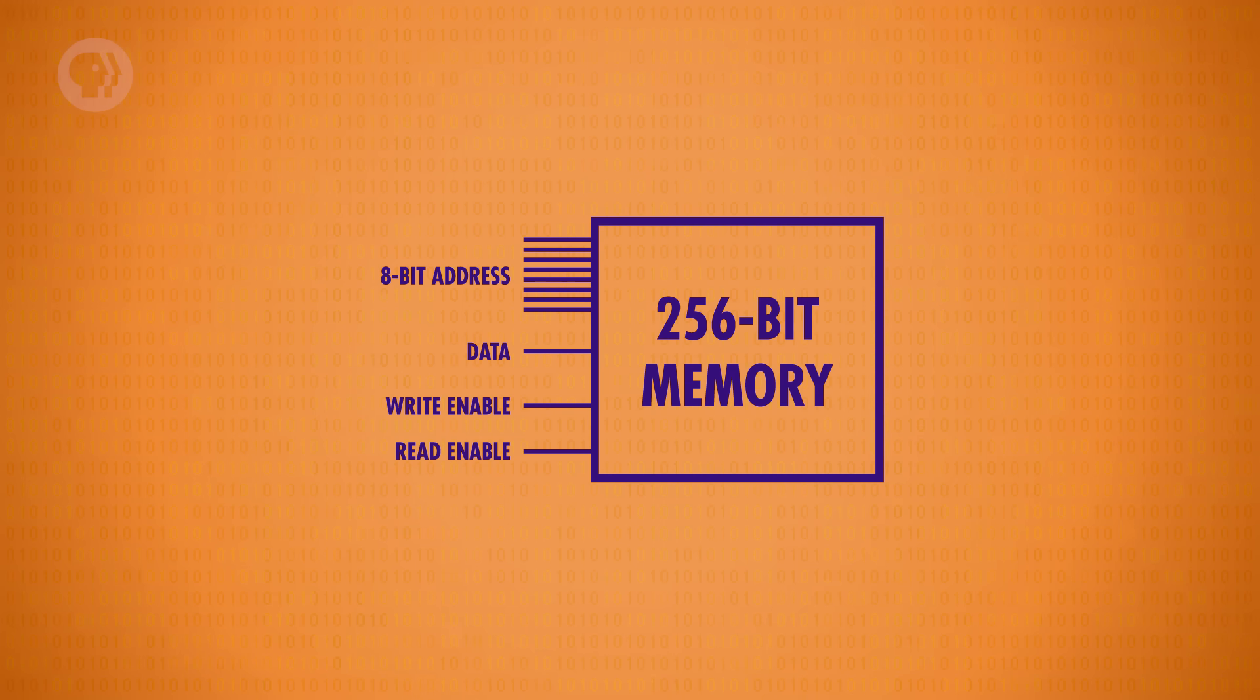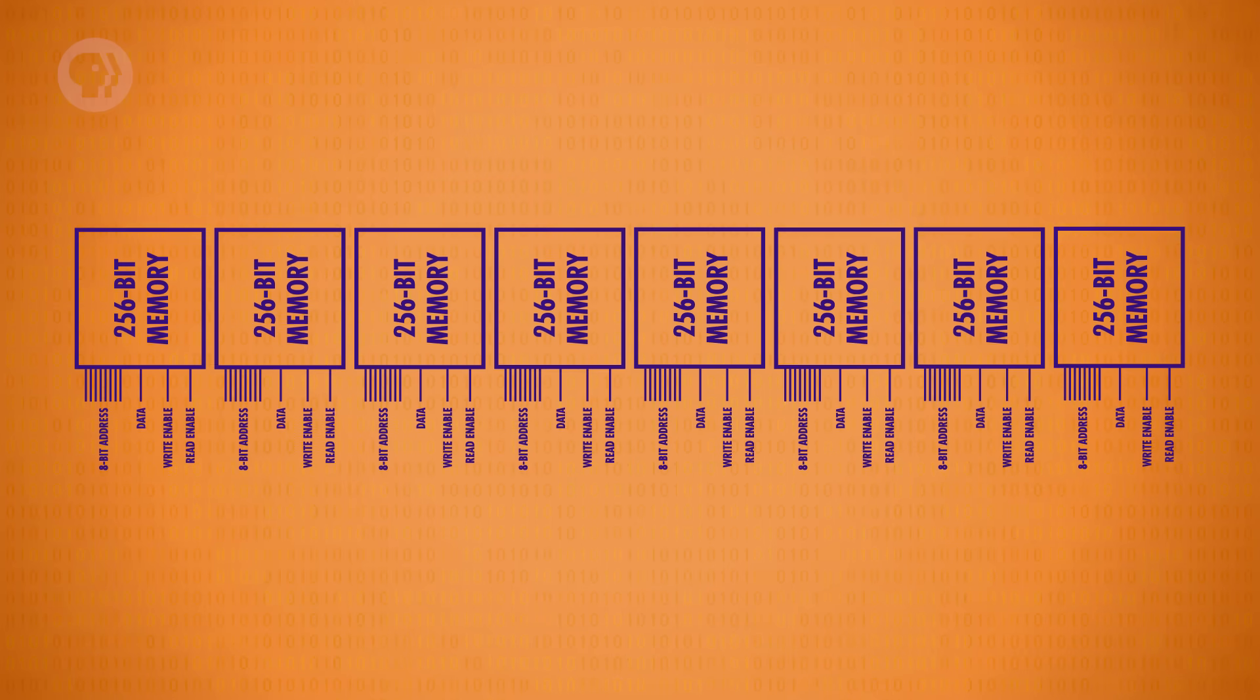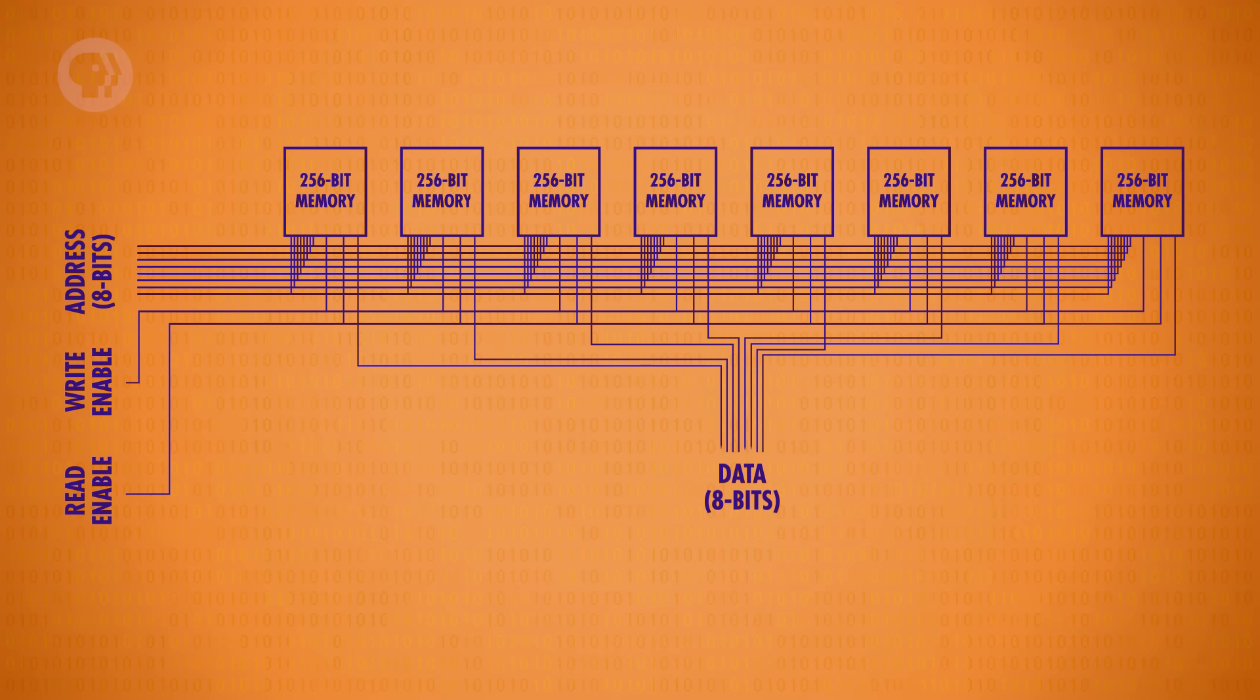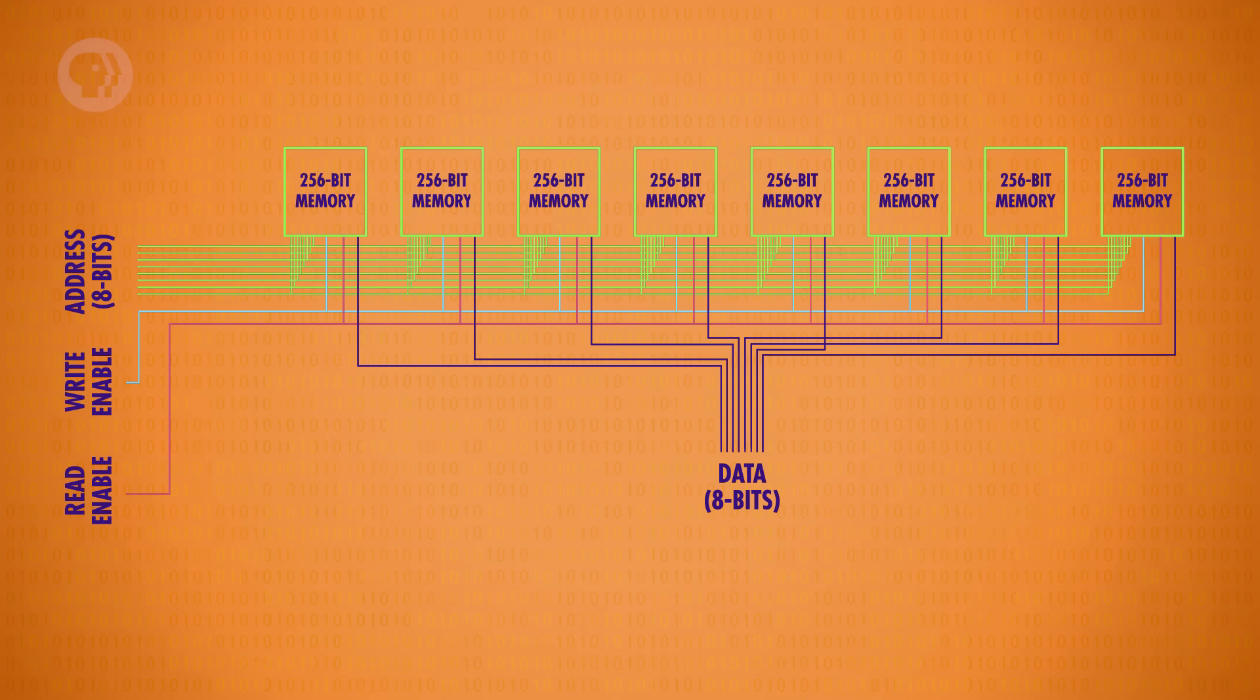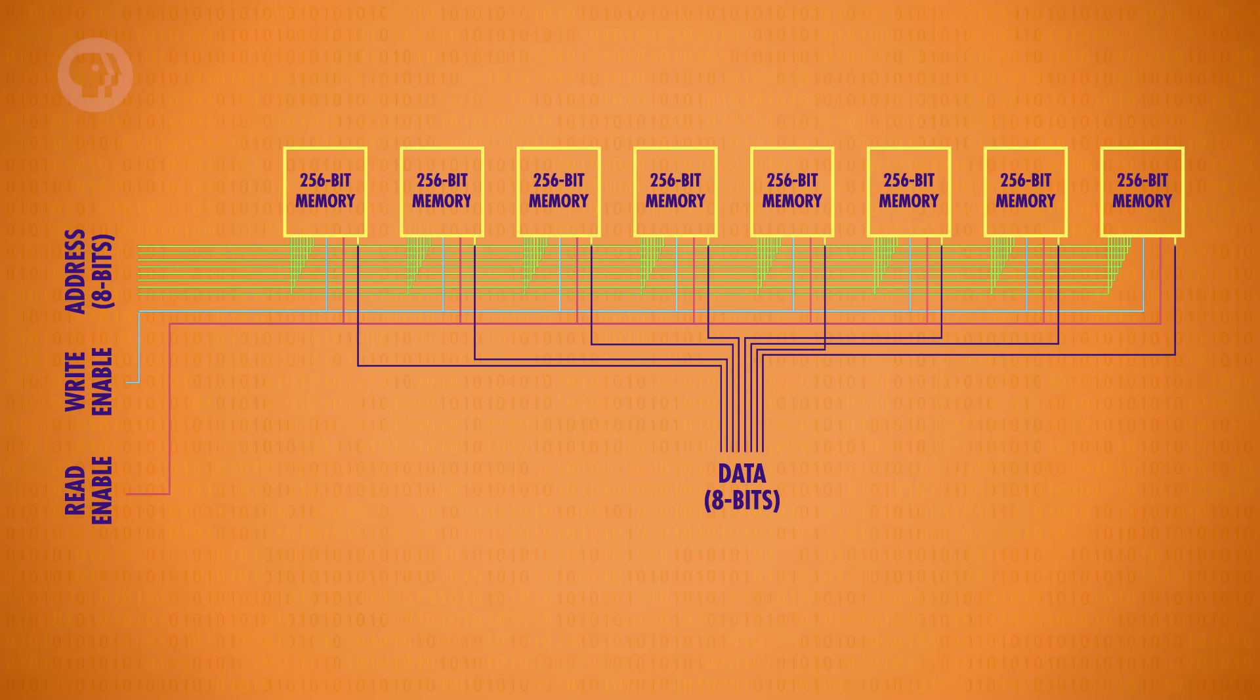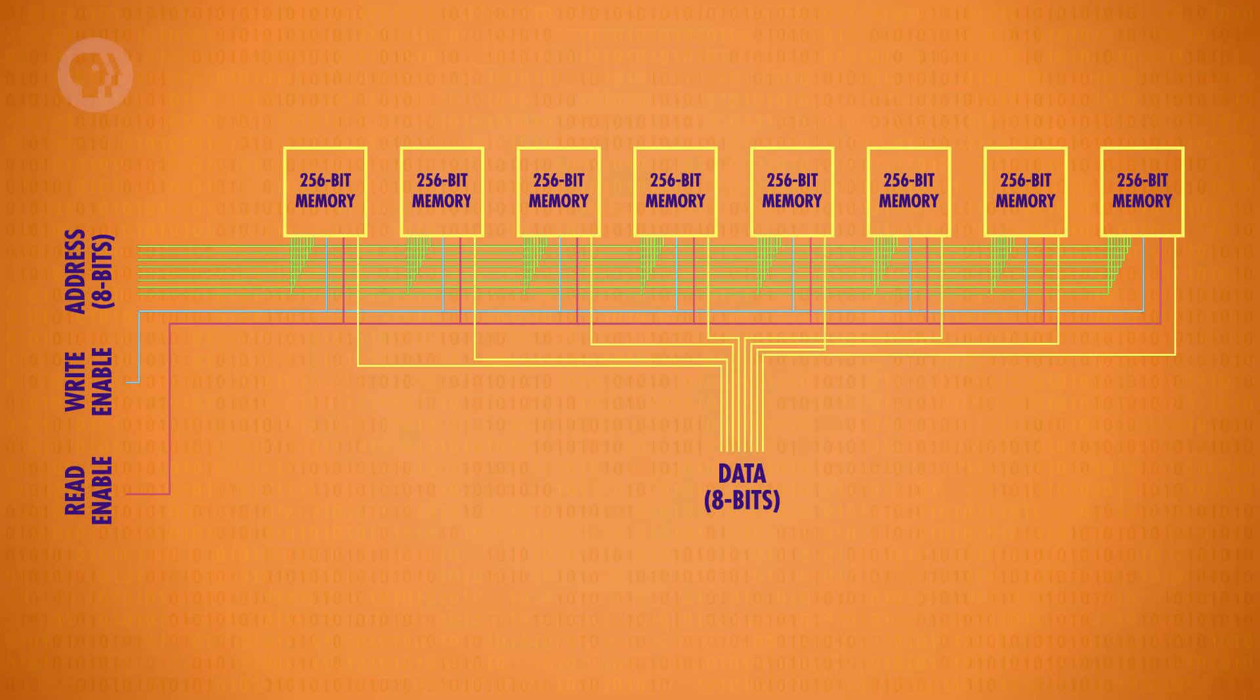Unfortunately, even 256 bits of memory isn't enough to run much of anything, so we need to scale up even more. We're going to put them in a row, just like with the registers. We'll make a row of 8 of them, so we can store an 8-bit number, also known as a byte. To do this, we feed the exact same address into all 8 of our 256-bit memory components at the same time. And each one saves one bit of the number. That means the component we just made can store 256 bytes at 256 different addresses.